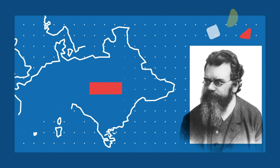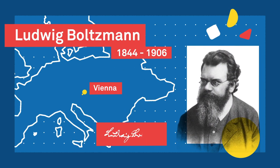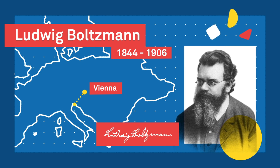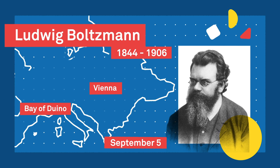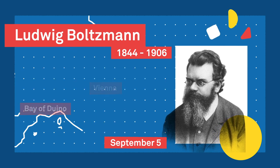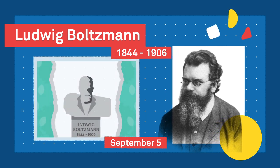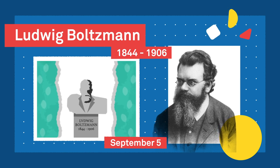In 1906, a 62-year-old Ludwig Boltzmann was vacationing with his family at the Bay of Duino in Italy. On the evening of September 5th, while his wife and daughter were out swimming, he took a length of cord, tied it to a curtain rod, and hanged himself.